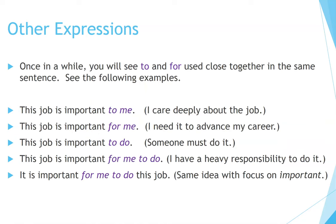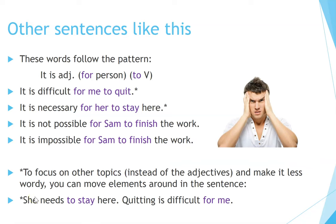Other expressions: once in a while you will see 'to' and 'for' used close together in the same sentence. Examples: 'This job is important to me' — I care deeply about it. 'This job is important for me' — I need it to advance my career. 'This job is important to do' — someone must do it. 'This job is important for me to do' — I have a heavy responsibility. 'It is important for me to do this job' — same idea with focus on 'important.' These sentences follow the pattern: 'It is adjective for person to verb.'